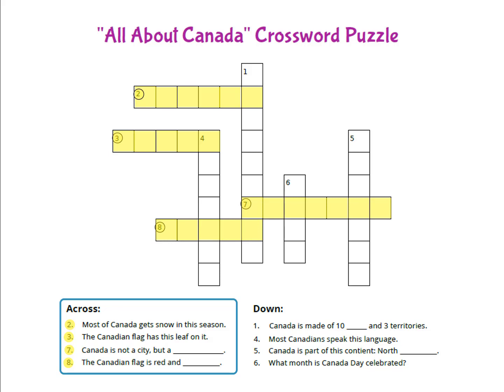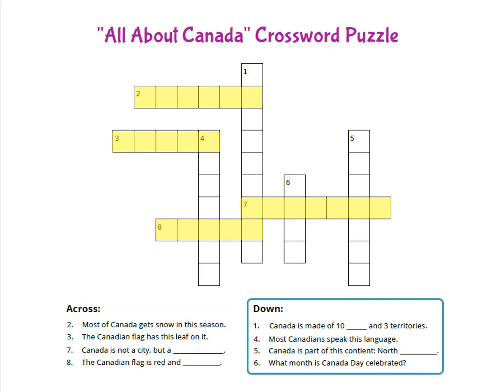Next, let's look at the clues for the words that go down from top to bottom. This is clue number one, and the answer starts at number one square, which has nine letters. Here's clue number four and the answer number four, which has seven letters.